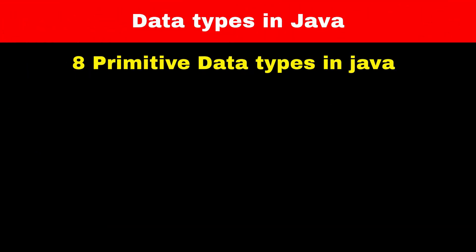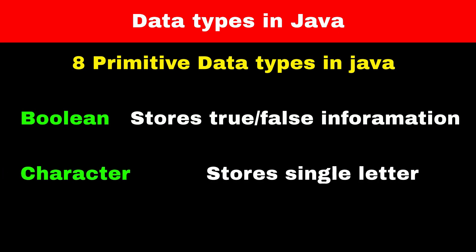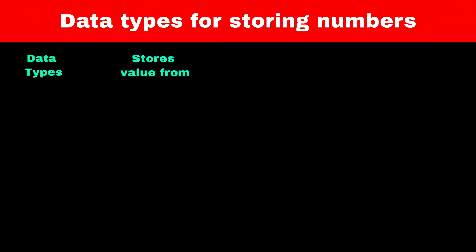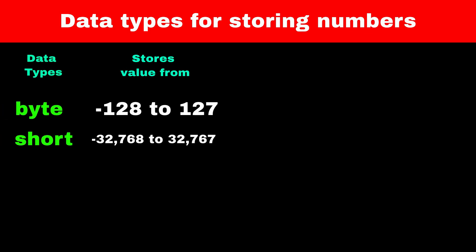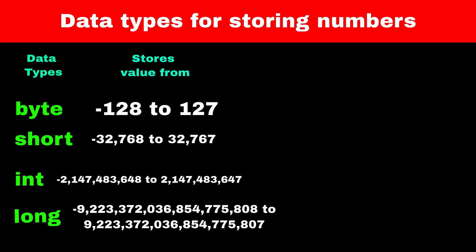Java has eight primitive data types. First is Boolean — it is used for storing true or false information. Next is Character — it is used to store a single character, like a letter. The next six data types are used to store numbers: byte, short, int, and long, which are used to store different sizes of whole numbers.